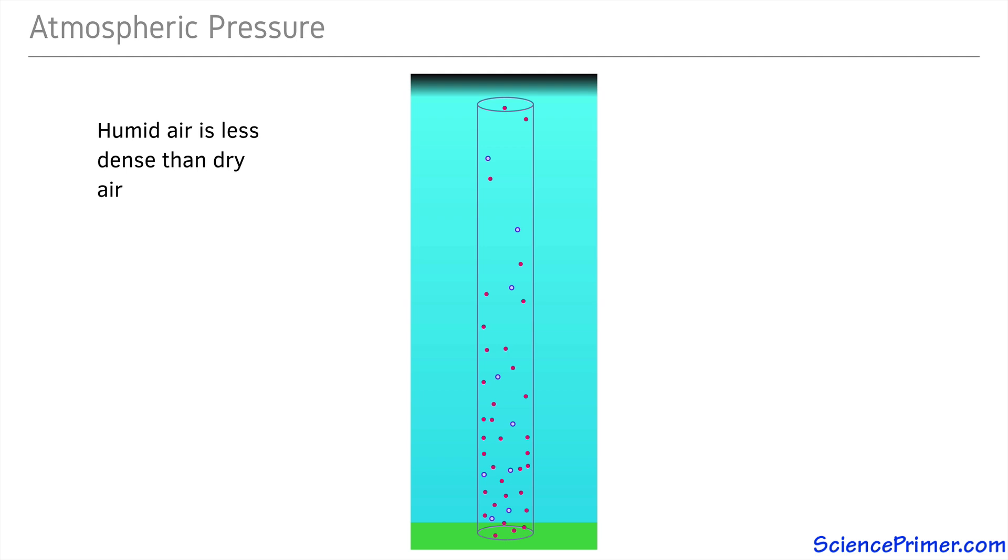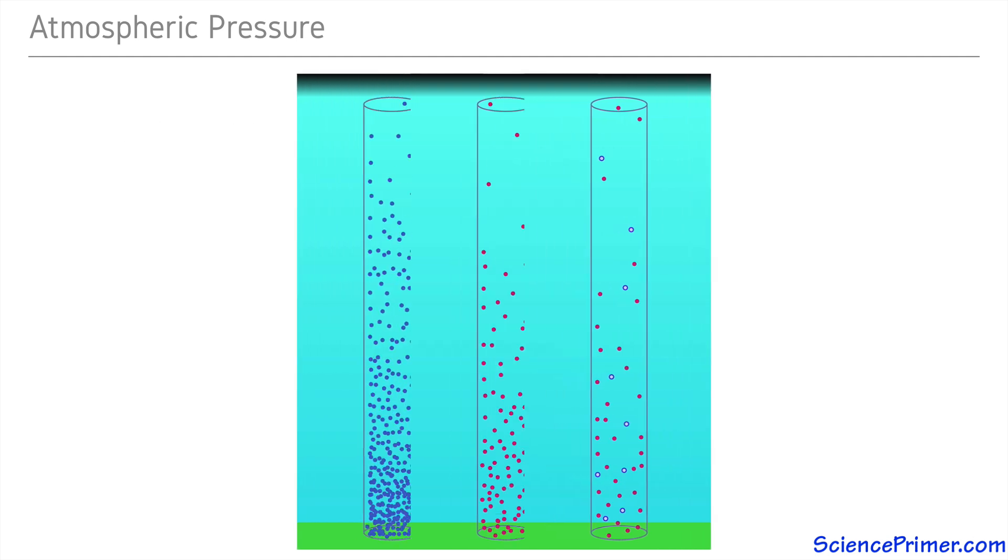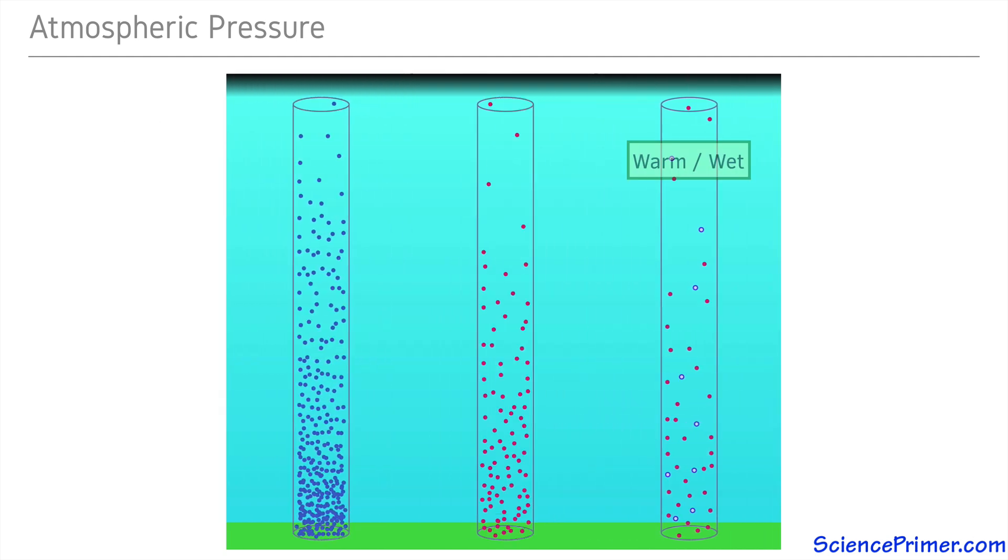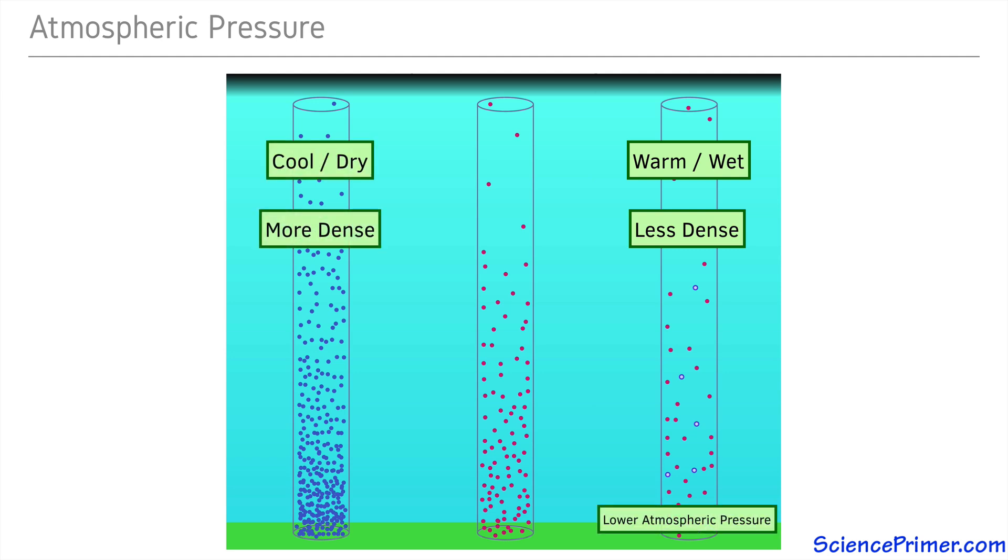As air gets warmer and gains water vapor, atmospheric pressure decreases. Warm, wet air is less dense than cool, dry air. And atmospheric pressure decreases as gas in the atmosphere warms and as humidity increases.